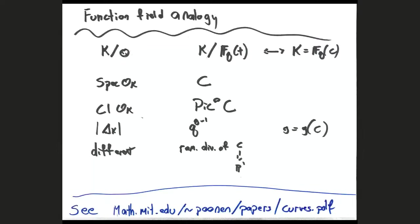The analogy of the absolute discriminant corresponds to q^g where g is the genus. The analog of the different is the ramification divisor of the map from C to P^1. When we count things based on discriminant or different, that's roughly the same as counting by genus. There's also a smoothing process — counting by the radical of the discriminant, i.e., just the product of the ramified primes — where things seem to work better.